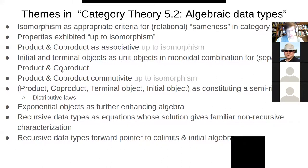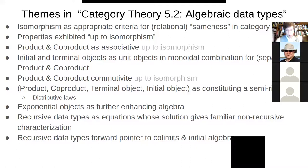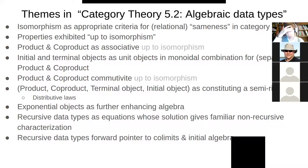Similarly, if we have an object A and take the co-product of A with an initial object, we get A back. It's A or nothing — it can't be anything other than A. With product, we have a pair of A with something that's always the same — there's no new information added, just baggage being carried around with no additional value. So it's basically just A. The product and co-product are commutative up to isomorphism.